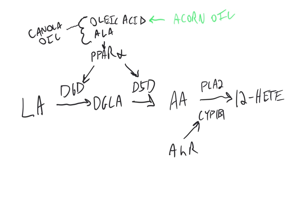The expression of D6D and D5D are controlled by the transcription factor PPAR-alpha. When PPAR-alpha is activated, it will increase the conversion of linoleic acid to arachidonic acid. Oleic acid and ALA are both things that activate PPAR-alpha, so if the fat you're eating is higher in these things, you will activate PPAR-alpha and convert a higher percentage of linoleic acid to arachidonic acid. So the question I'm asking in this video is: is it ultimately the amount of linoleic acid consumed, or is it the activity of these enzymes that are actually converting linoleic acid to the oxidized lipids?